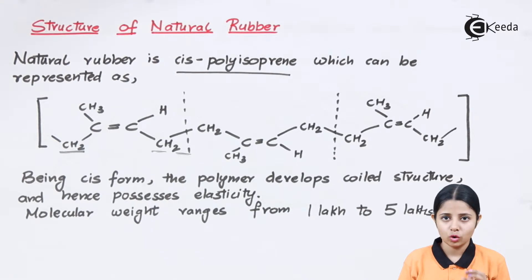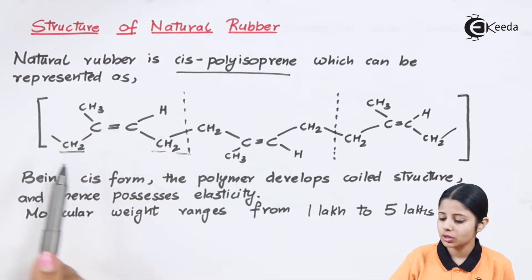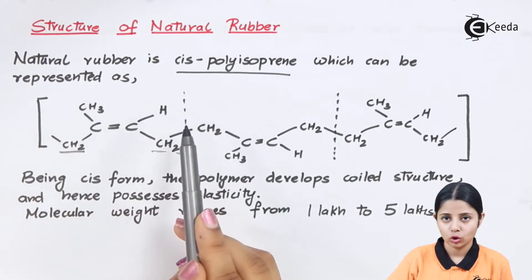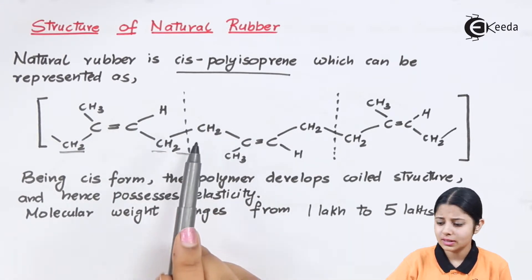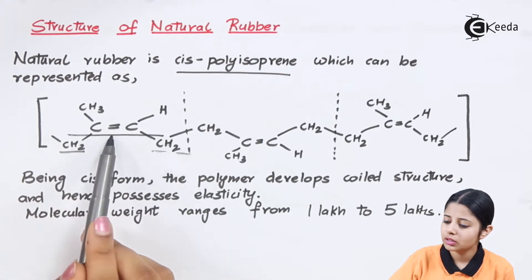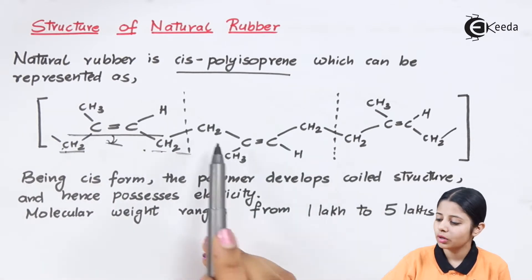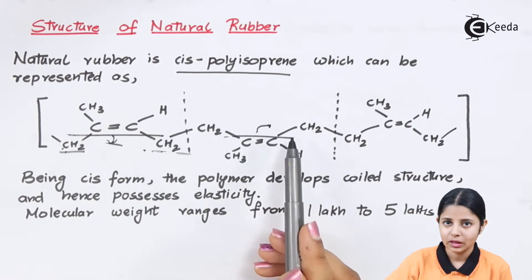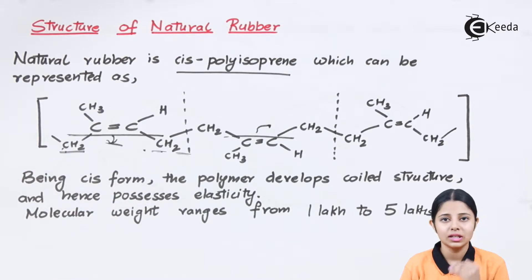Let us discuss one monomer distinctly. All three monomers are the same. I have C=C, and at the cis positions I have CH2 and CH2 attached to it. On the top I have CH3 and an H. This CH2 will connect to the next monomer. Below the C=C, both groups are attached in the cis format.